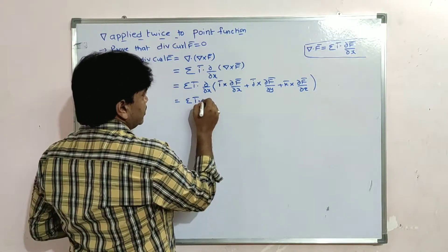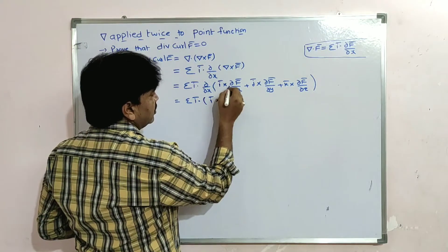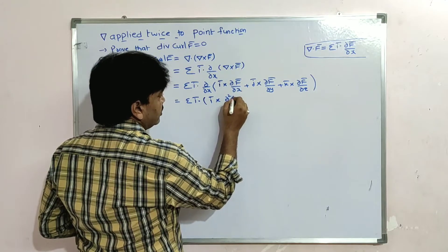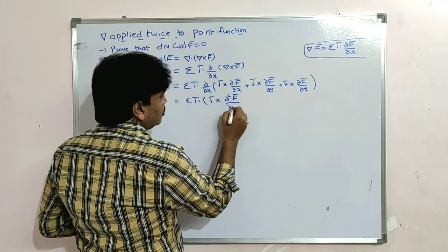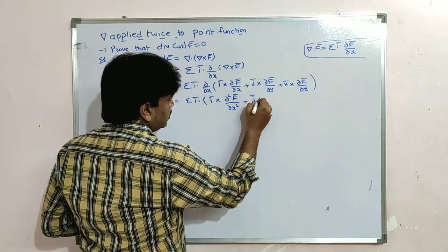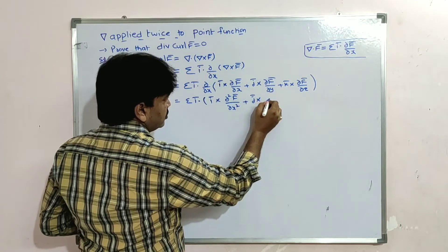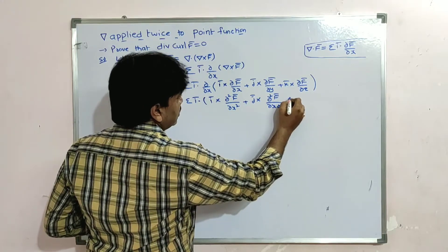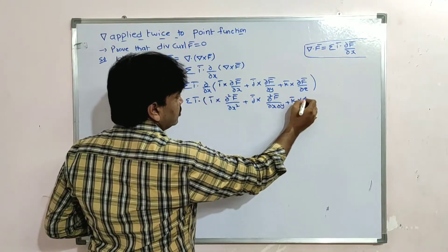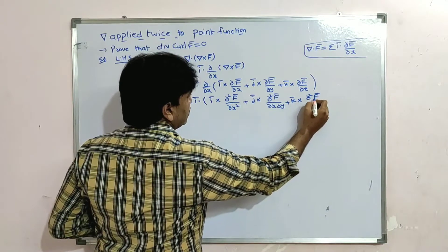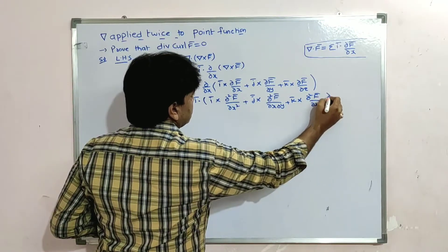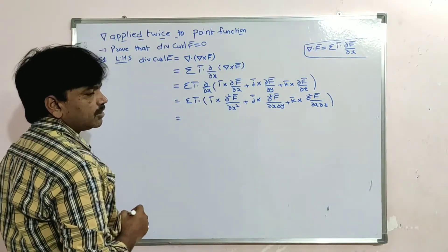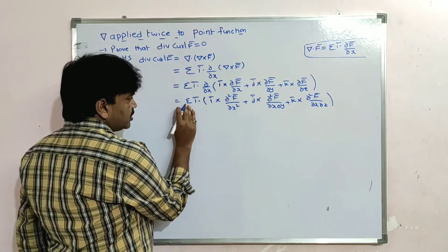Now differentiate partially with respect to x. So we get here: i̅ cross (∂²F̄/∂x²) + j̅ cross (∂/∂x)(∂F̄/∂y), which gives ∂²F̄/∂x∂y, plus k̅ cross (∂/∂x)(∂F̄/∂z), which gives ∂²F̄/∂x∂z.